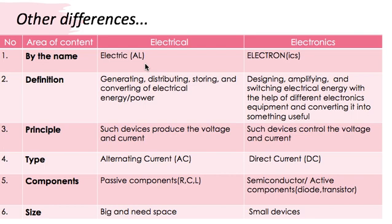Now let's look at the definition. Electrical devices are defined as something that generates, distributes, stores and converts electrical energy into various other forms of energy like heat energy, light energy, etc. Whereas electronics is used for designing, amplifying and switching the same electrical energy with the help of certain electrical equipment and converting it into something useful. We will cover those electrical equipments and conversions in detail in the coming videos.